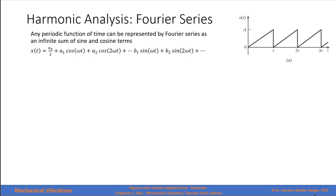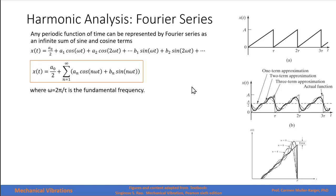The physical interpretation of a Fourier series is that any periodic function can be represented as the sum of harmonic functions. Although a Fourier series is an infinite sum, most periodic functions can be closely represented using only a few terms. For example, a triangular wave can be represented closely by adding just three harmonic functions.